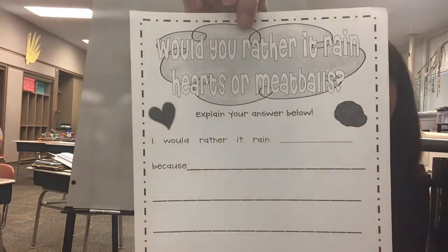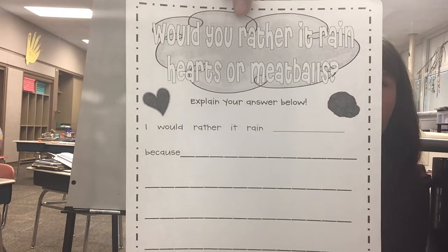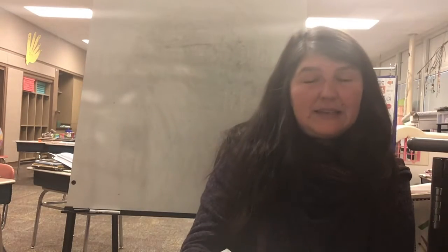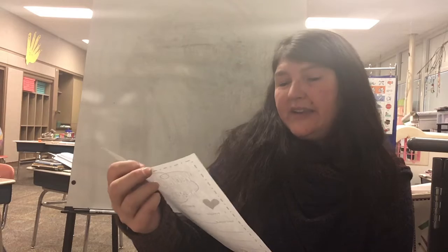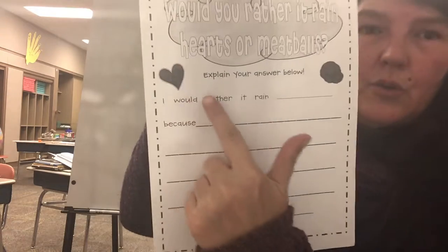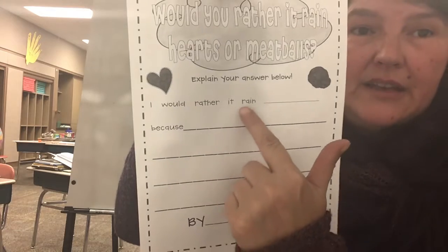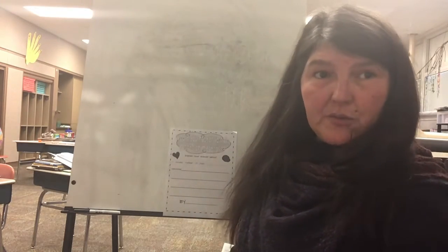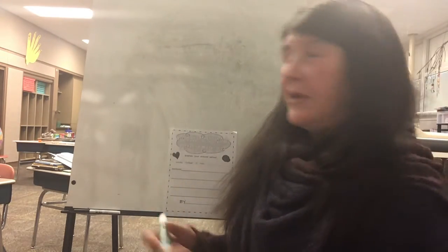Alright boys and girls, inside of your packets you also have 'would you rather it rain hearts or meatballs.' This is an opinion writing piece and it says explain your answer below. I would rather it rain blank. Well, on that blank you have to write which you would rather it rain, hearts or meatballs. I'm going to pick hearts.